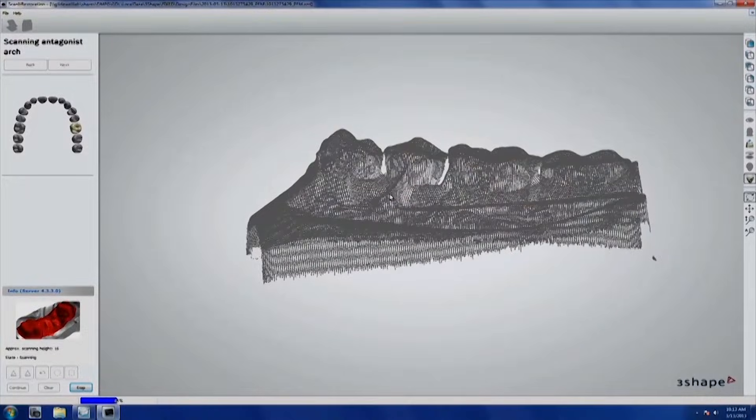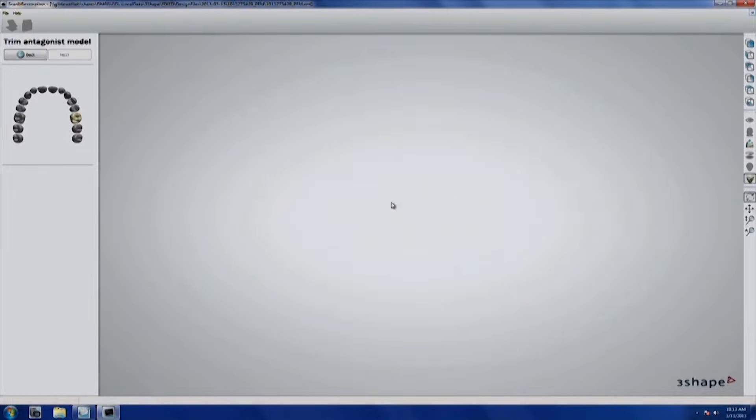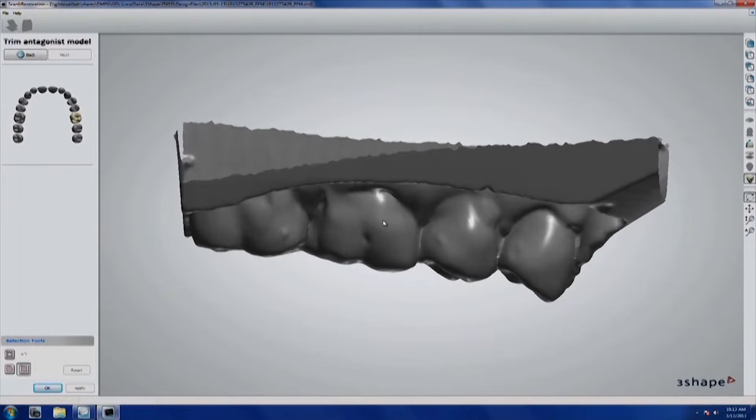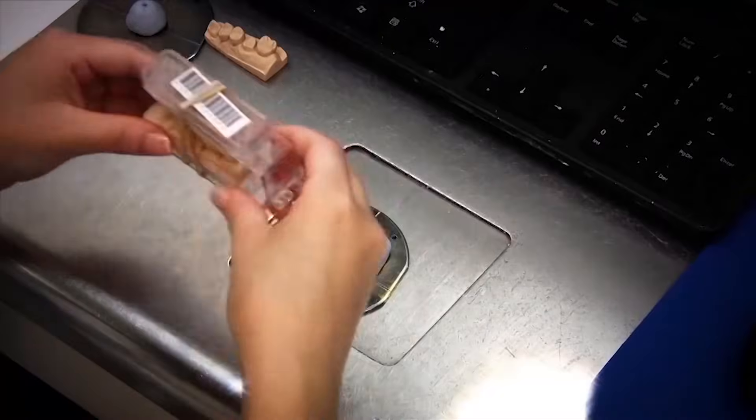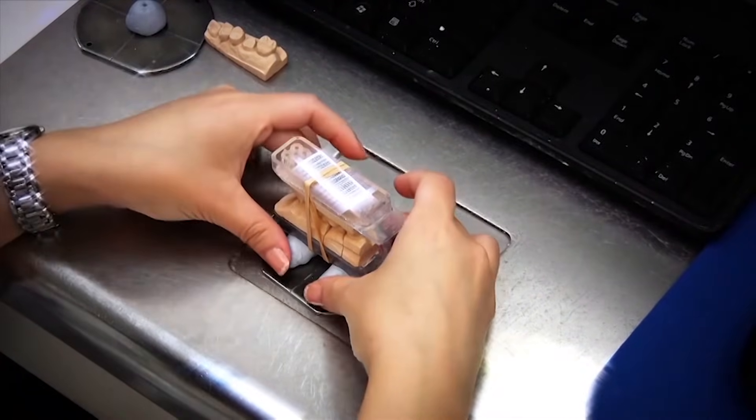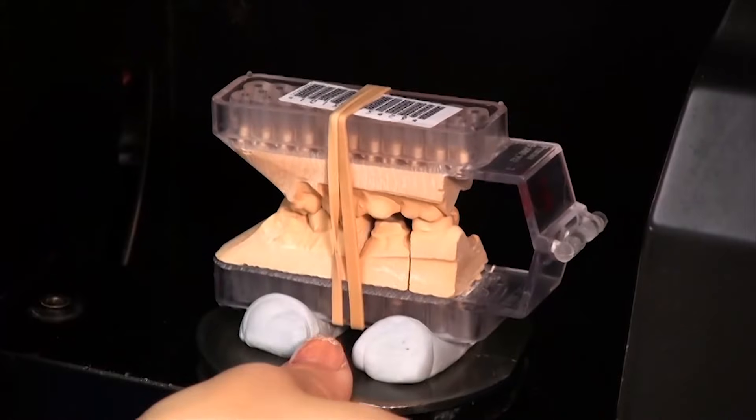And now we're going to scan it and bring it into the digital environment. So it's going to look like the dentist took a digital impression in the mouth. It's just that we had to do it ourself. And it's not quite as accurate as if the dentist did it in the mouth, to be honest, because there's distortions in polyvinyl and dental stone.